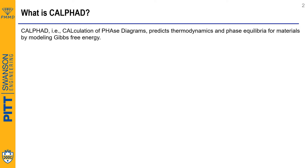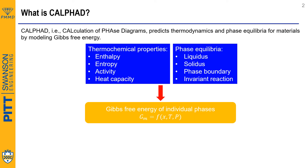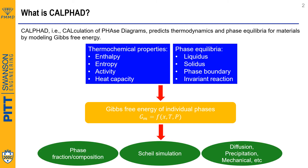What is CALPHAD? It is the abbreviation of calculation of phase diagrams. It uses thermochemical properties and phase equilibrium data as input to model, and gives the free energy of individual phases as a function of composition, temperature, and pressure. Researchers can further use this information to calculate phase fraction and composition, to perform shell simulation under rapid solidification, and to offer essential information to diffusion, precipitation, and mechanical simulations.